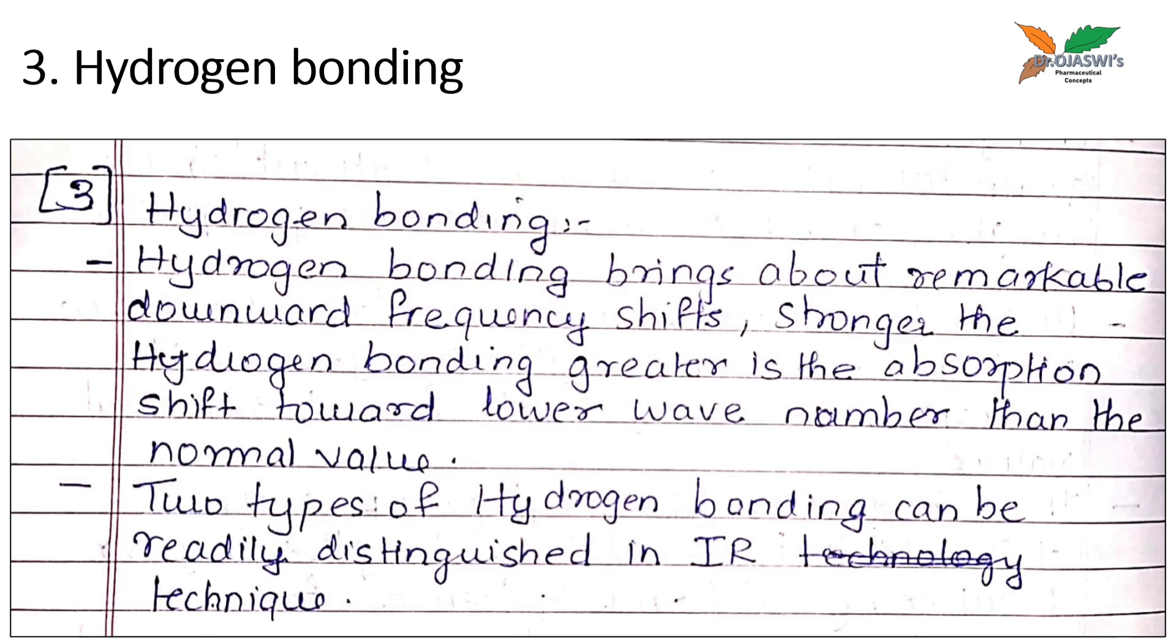There are two types of hydrogen bonding: intermolecular hydrogen bonding and intramolecular hydrogen bonding. These hydrogen bondings can be readily distinguished in IR technique. If any kind of hydrogen bonding is there, it is going to shift the vibrational frequency towards the lower value.